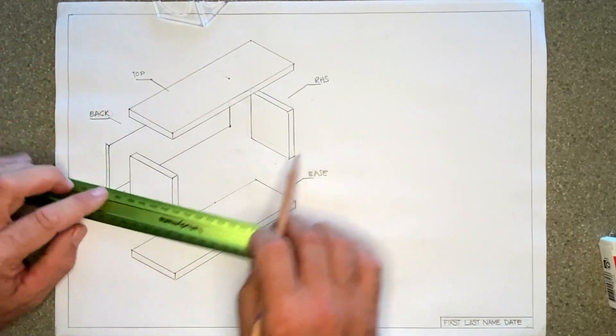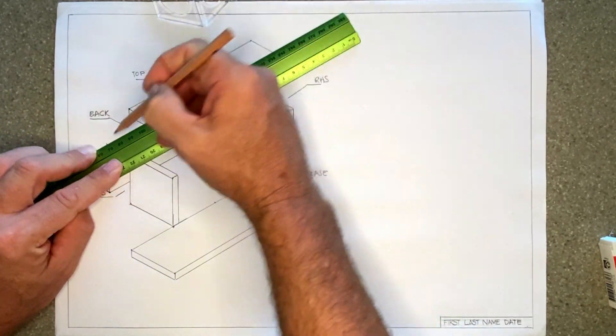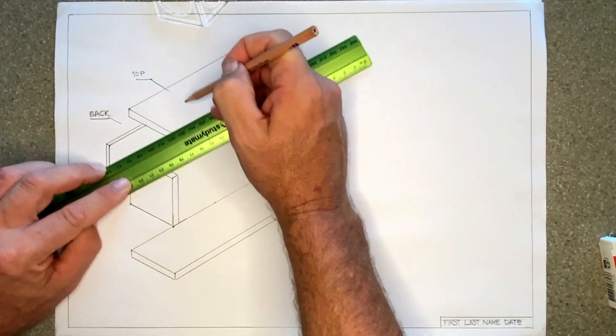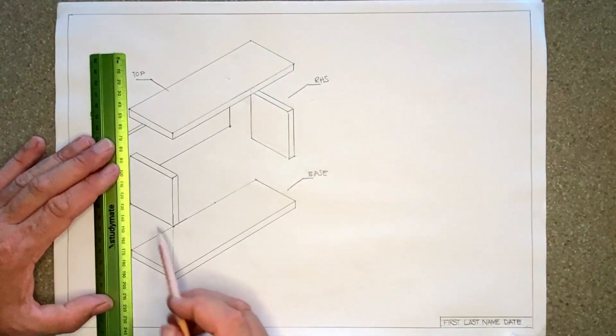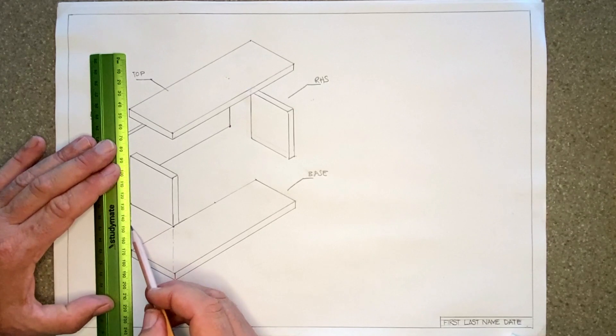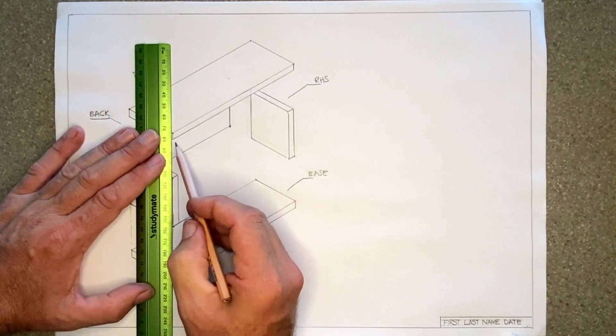I'm adding some thickness. If this back is maybe three millimeter ply or MDF, then we're going to halve that and draw it as one and a half or say two millimeters. I'm using a dot dash line to show how the corners are going to line up, how it comes together.